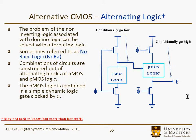Moving along, we saw the dynamic logic block called domino. This is a variation on it where you alternate between an NMOS block to implement the logic and the next stage using PMOS to implement the logic. For the NMOS stage, you pre-charge the node high and conditionally it will discharge. The opposite case happens for the PMOS logic block, where we pre-charge the output node to ground and then conditionally pull it up to VDD.